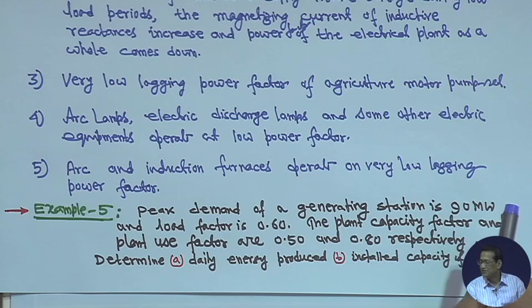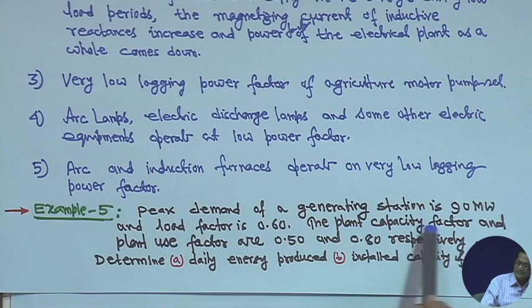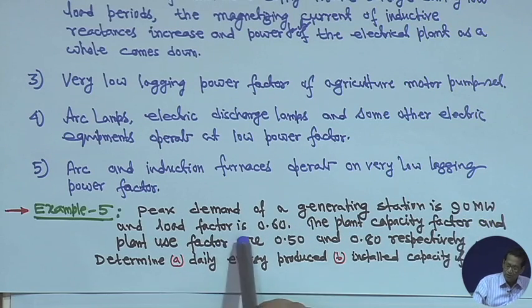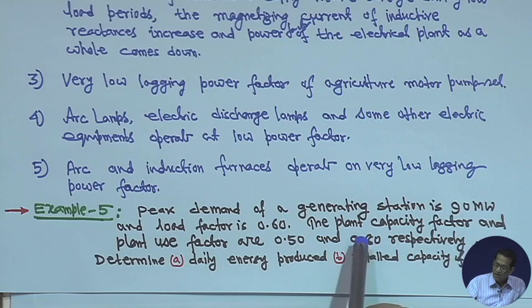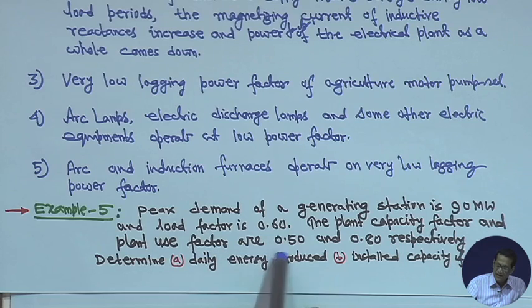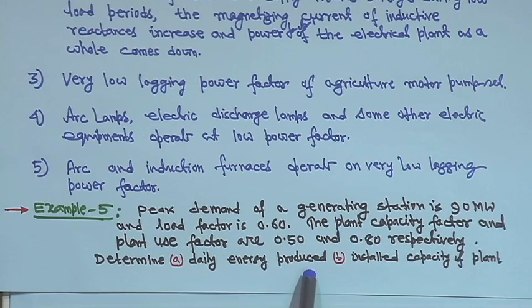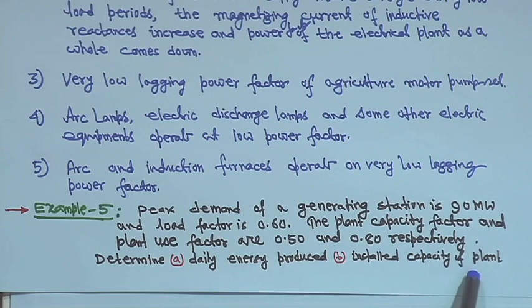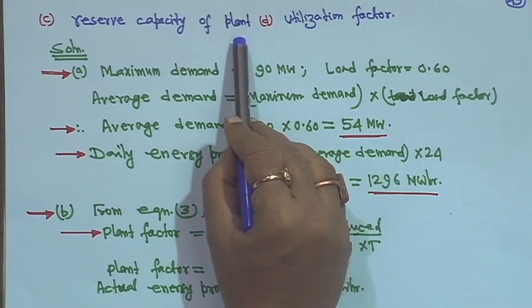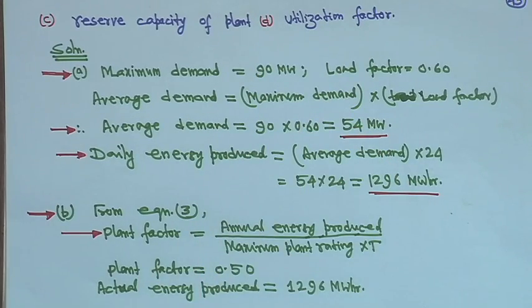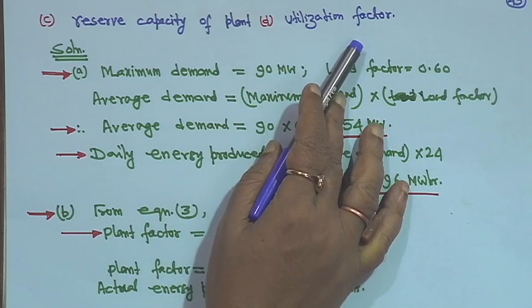Next, we take an example. A peak demand of a generating station is 90 MW and load factor is 0.6. The plant capacity factor and plant use factor are 0.5 and 0.8 respectively. Determine: (a) daily energy produced, (b) installed capacity of plant, (c) reserve capacity of plant, and (d) utilization factor.